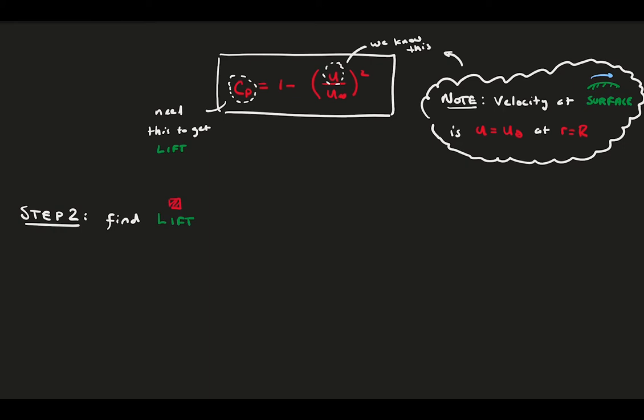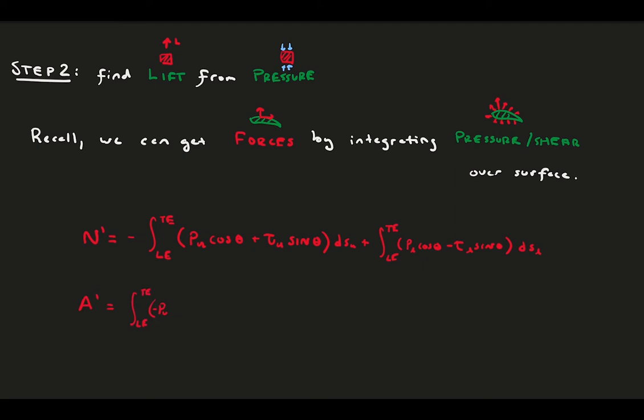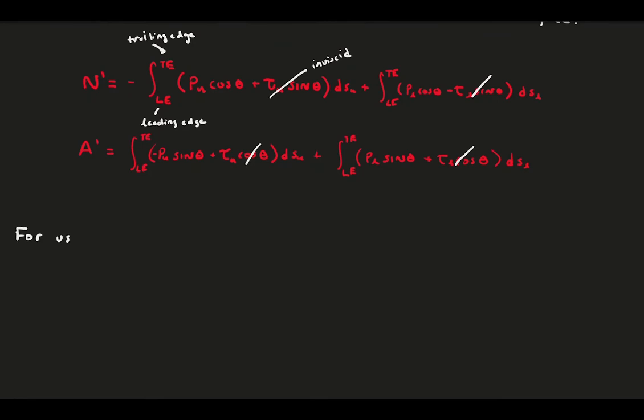On to step 2. We want to turn the pressure distribution into a force. This is something we were exposed to a few videos ago when we discussed aerodynamic forces. Recall our equations for finding the normal force and axial force of a body from integrals of the pressure and shear distribution on the upper and lower surfaces of that body. For us, flow is inviscid, so all those pesky shear terms go away.